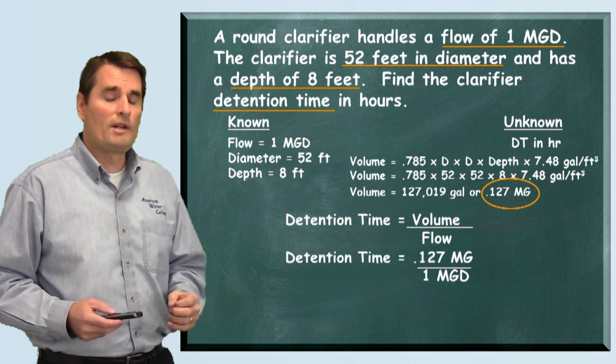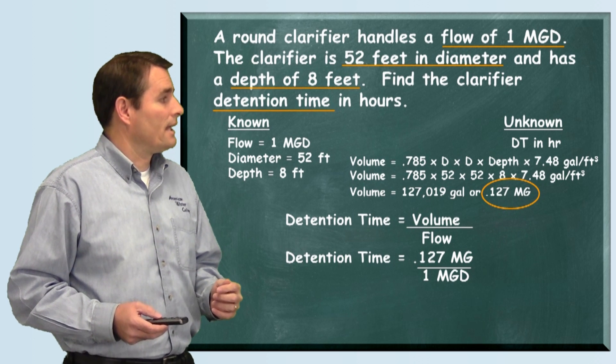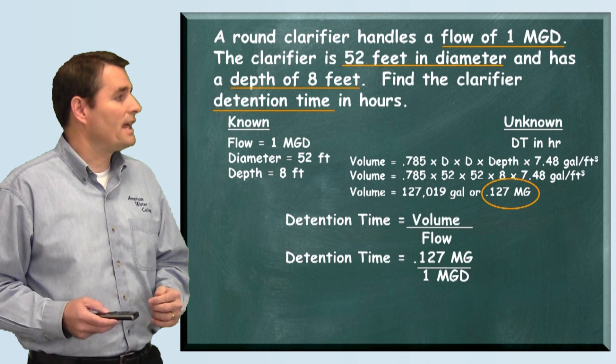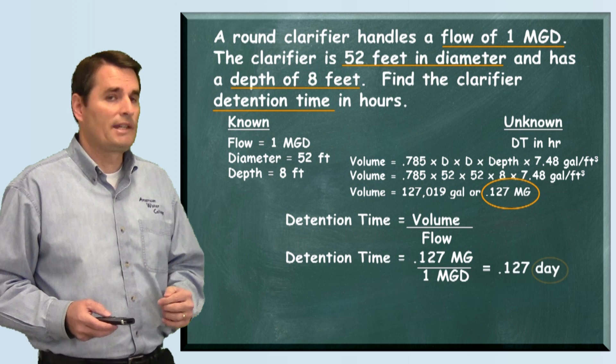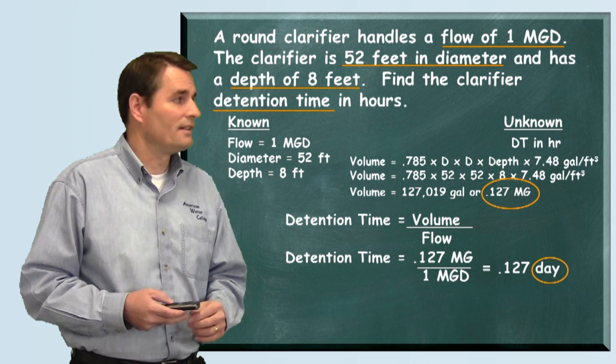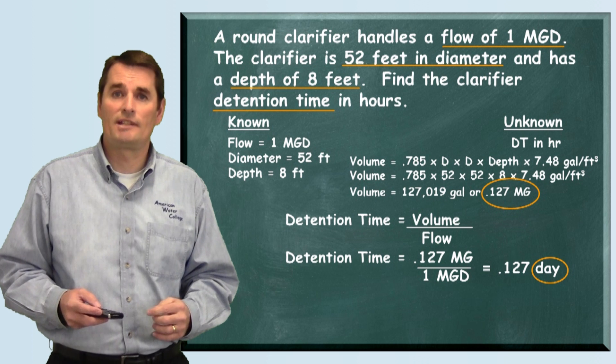We plug in our 0.127 MGD and divide that by 1 million gallons per day. And when we do that math, we get 0.127 days. So our detention time is 0.127 days.